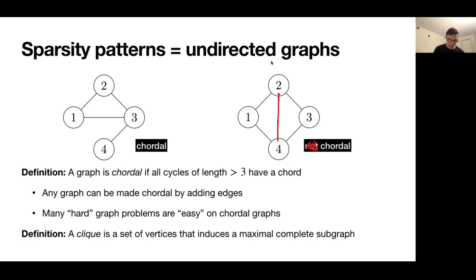Finally, one more definition. A clique is a set of vertices that induces a maximal complete subgraph, complete meaning that all the vertices in that subgraph are connected to each other. So for example, on the right, there are two cliques now that I've added this edge. One is 124 and the other is 234.